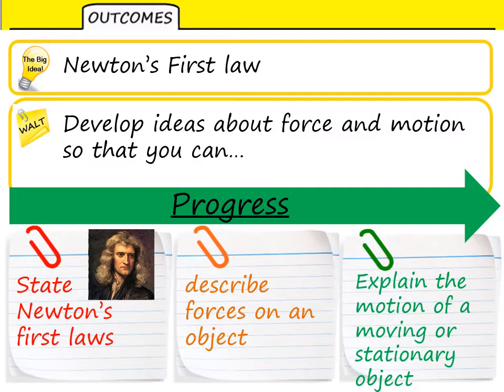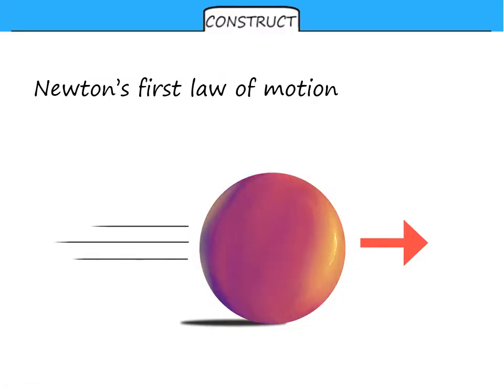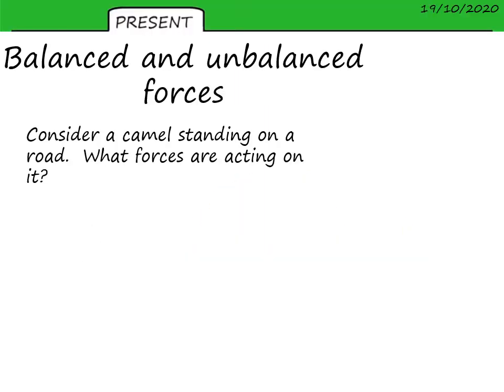Today we're going to take a look at the first of Newton's laws. We will state it, describe the forces of an object, and use this information to explain the motion of a moving or stationary object. So what is Newton's first law of motion? Well, this rolling bowling ball illustrates a good example. It's moving with a constant speed, just trundling across a frictionless floor.